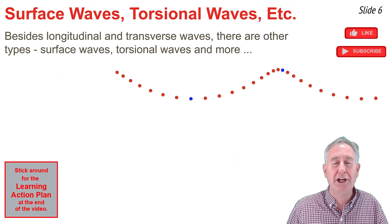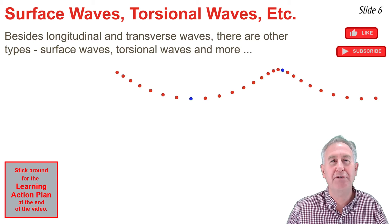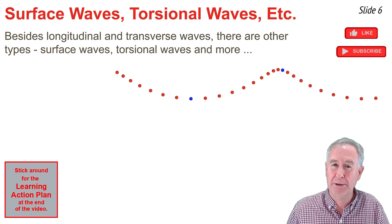Longitudinal and transverse waves are the two most common wave categories discussed in a typical first-year physics course. But there's other categories at least worth mentioning, like surface waves.